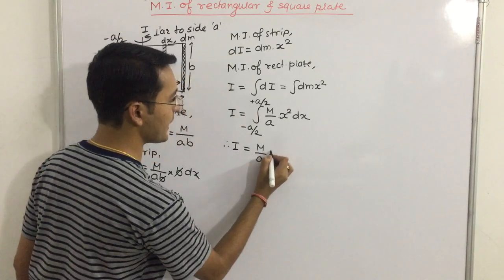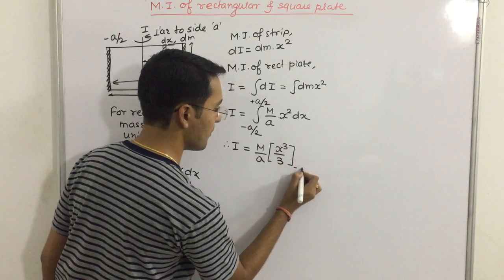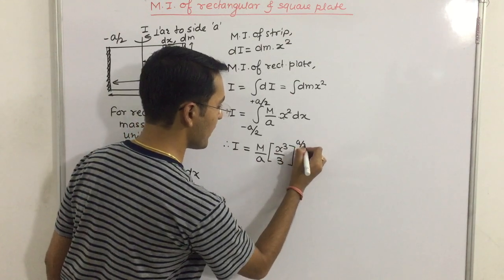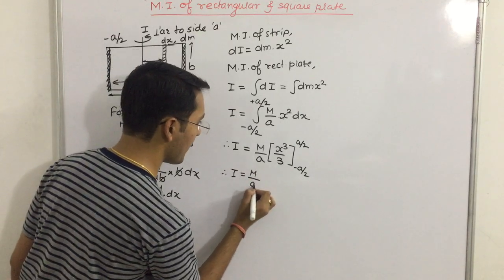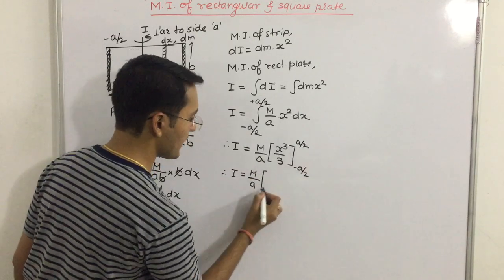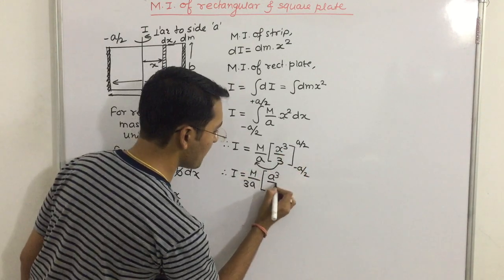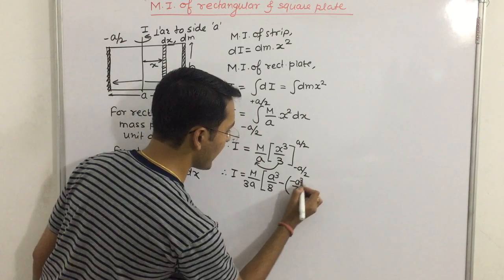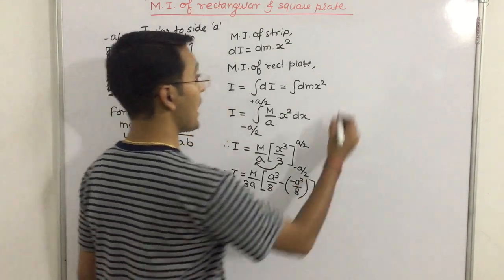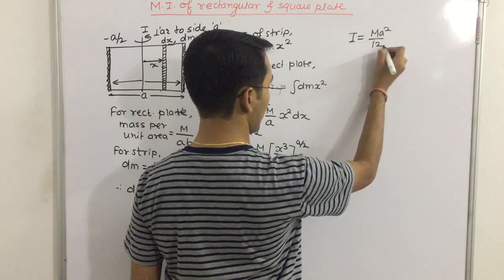Therefore moment of inertia, m by A into 1 by 3, x cube by 8 minus minus A cube by 8. If we solve, I is equal to m A square by 12.